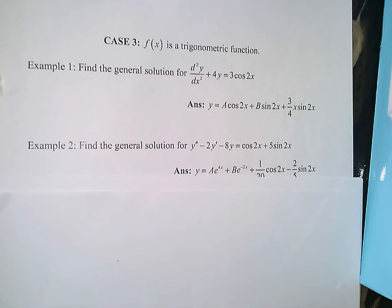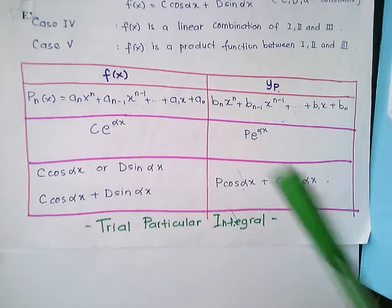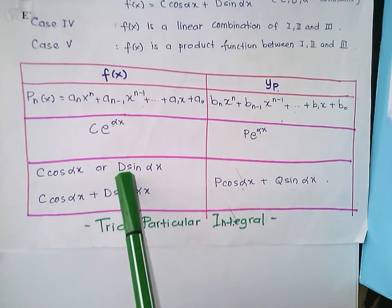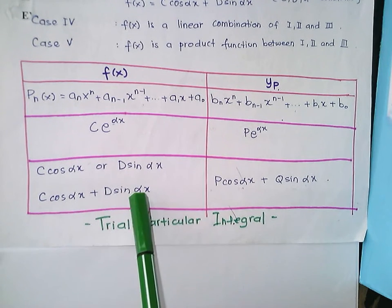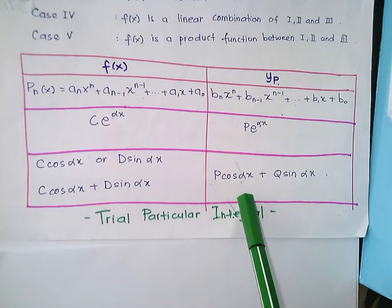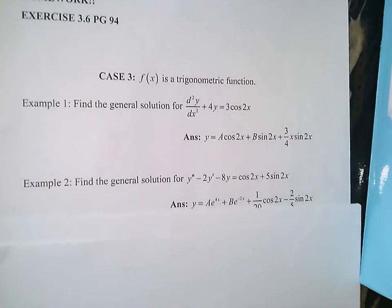Assalamualaikum. Good news, guys — we are going to proceed with the last part of the method of undetermined coefficients, which is Case 3, where your f(x) is a trigonometric function. In the previous video, I already told you: if your f(x) is either a cosine function, a sine function, or an addition of cosine and sine functions, your suggestion for yp is a combination of cosine and sine. So let's try to solve this one.